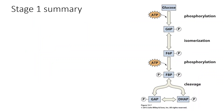Before moving to Stage 2, let's summarize Stage 1. We started with glucose, performed a phosphorylation (Step 1), an isomerization (Step 2), another phosphorylation (Step 3), a cleavage (Step 4), and an isomerization (Step 5). Some steps were reversible, some irreversible. We inputted two ATPs during the two irreversible steps. We started with a six-carbon molecule and ended with two three-carbon GAP molecules that will now enter Stage 2.